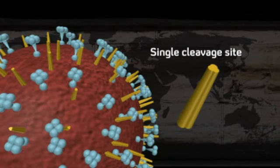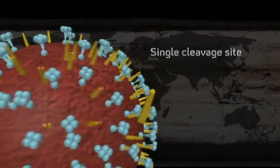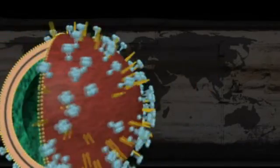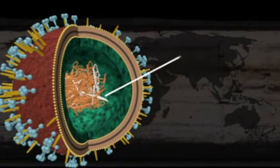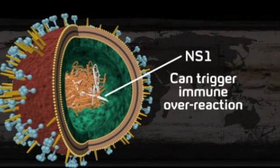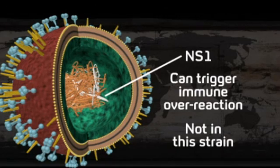Pathogenic strains like H5N1 — bird flu — have multiple cleavage sites, making them much more dangerous. And in its other genes, some variants of one called NS1 can trigger an overreaction of the immune system called a cytokine storm that can be fatal. But in this virus, NS1 is not unusual.